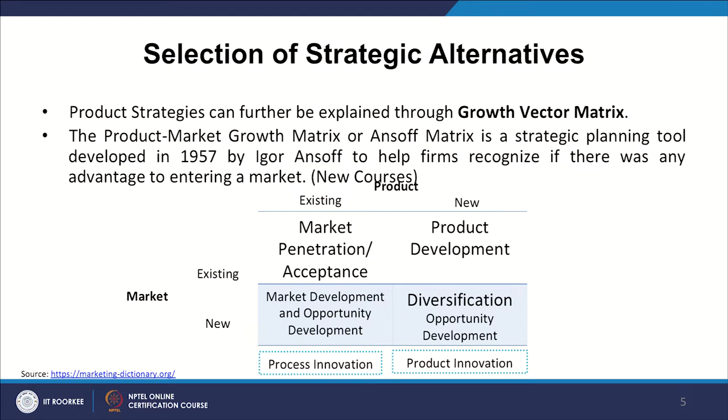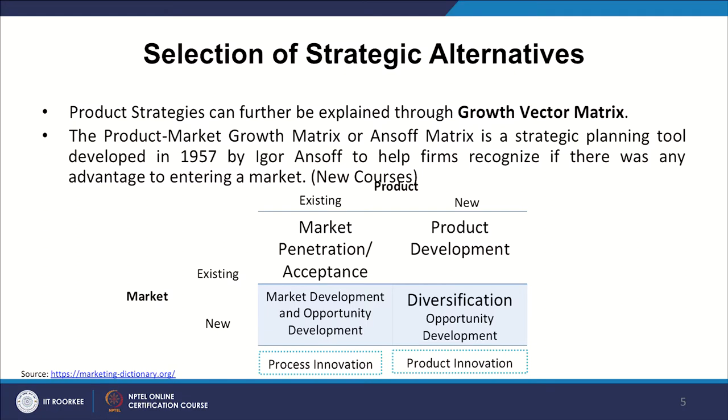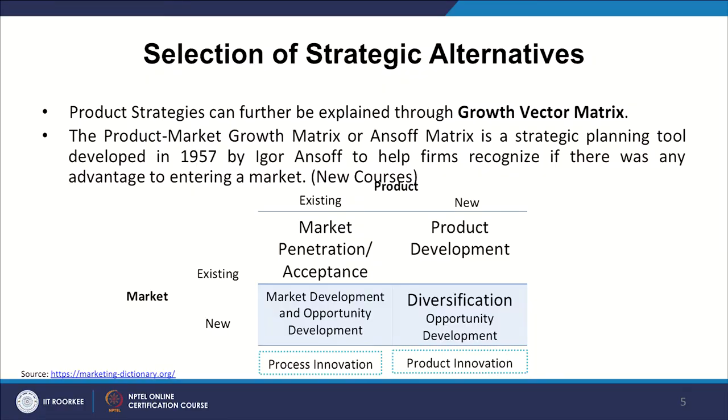In the quadrant where market is new and the product is existing, market development has to be done. You have to reach customers with the proposition so that it can be further developed in terms of their habits and usage. And lastly, where market is new and the product is new, you have lots of scope for diversification and market opportunity development — you bring a newer product to a newer market with a newer perspective. Both quadrants where the product is new — whether existing market or new market — come under product innovation largely. That is where the matrix tells many things by itself.